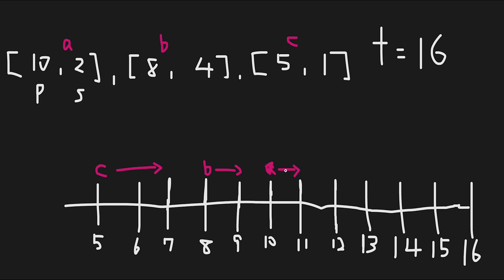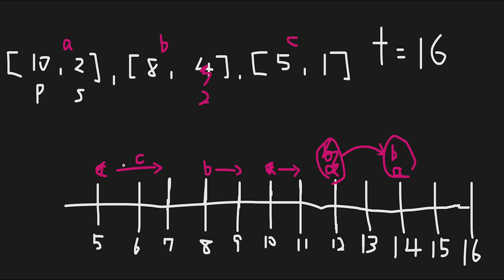So A moves 2, and B moves 4 — one, two, three, four — and C moves 1. Now B catches up to A. The description says the faster car slows down to match the slower car's speed, so B is now moving at 2. A and B are now a car fleet moving 2 every time step. Let's continue — A and B move 2, and C moves 1.